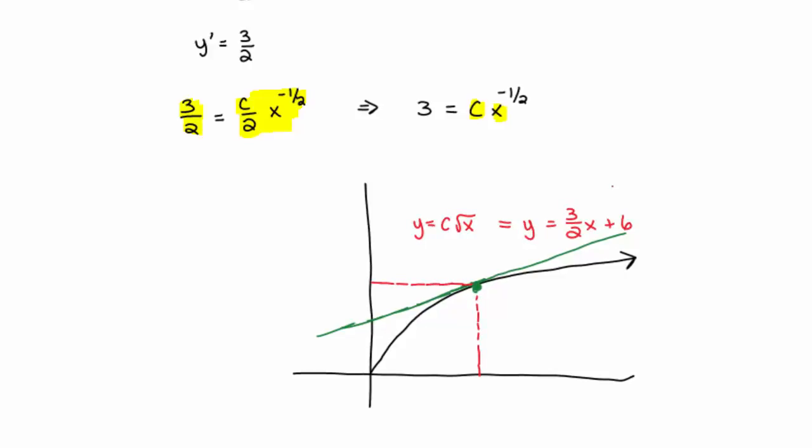So, in other words, c root x is equal to 3 halves x plus 6. So, that'll be actually my second equation. Let me write that down so you can see it. c times the square root of x is equal to 3 halves x plus 6. Now, I have one equation here and a second equation there. And they both, both those equations have the same variables, c and x.